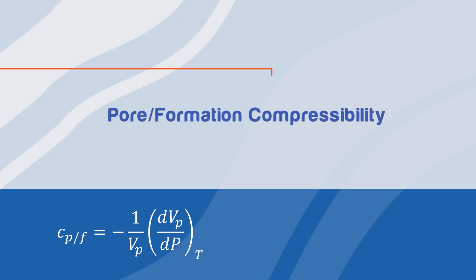Where cp/f is the pore/formation compressibility, vp is the initial pore volume, and dvp over dp is the change in pore volume over change in pressure.